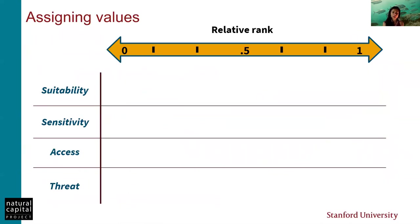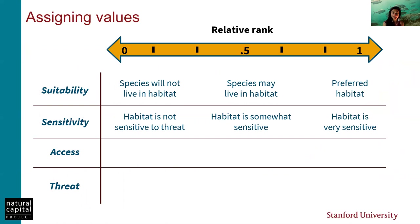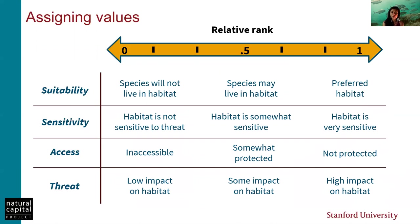The sensitivity table, the threat table, and the accessibility map are all scored between zero and one because it is a relative ranking model — we do not quantify anything in absolute terms. For suitability, zero means the species does not prefer this habitat while one means it is the preferred location. For sensitivity, zero means the habitat is not sensitive to the threat while one means it is very sensitive. For access, zero means fully protected and people cannot enter the area, while one means it is not protected and open for everyone. For threat, zero means low impact on habitat while one means very high impact.